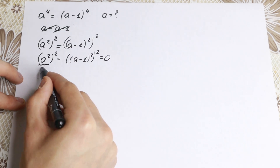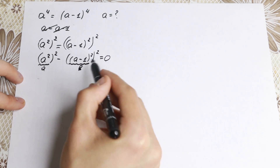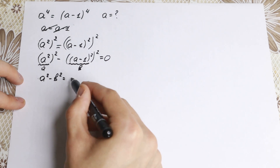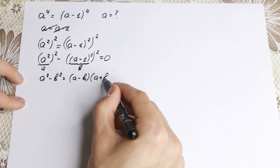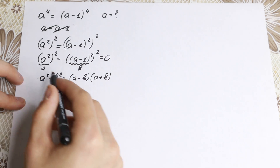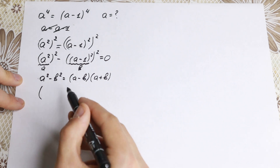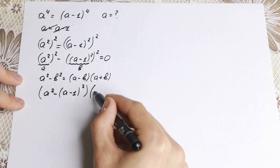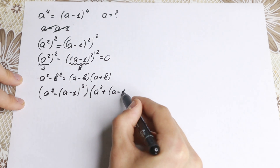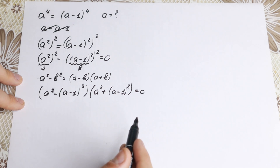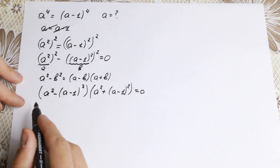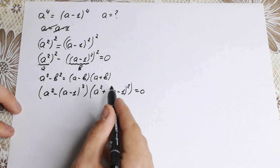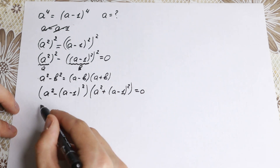Now we can apply the difference of squares identity: A² − B² = (A − B)(A + B), where A = a² and B = (a−1)². So in the left parenthesis we have a² minus (a−1)², and in the right parenthesis we have a² plus (a−1)². This gives us two factors, each of which could give us two roots — so we don't miss any roots.